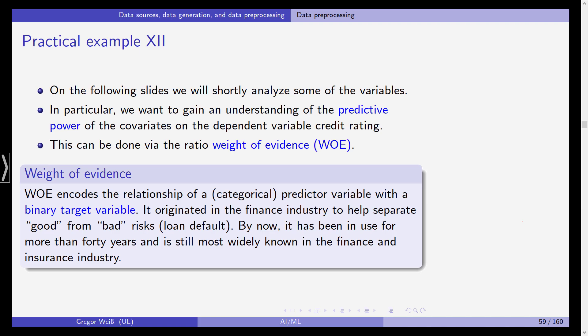Now the weight of evidence encodes the relation between a categorical predictor variable with a binary target variable. So we have the binary target variable which in our case is good rating, bad rating and we have our numerous predictor variables which need to be categorical and this weight of evidence ratio originated in the finance industry actually in this very same setting. It was used to separate good from bad risks. It has also been in use in other areas for quite some time now but it's still best known in finance and insurance industry.